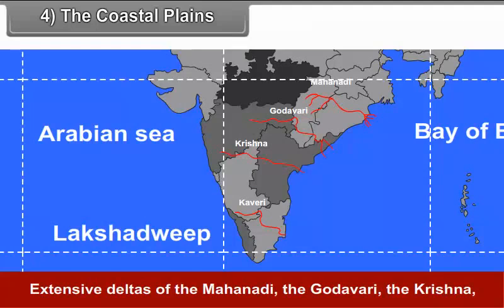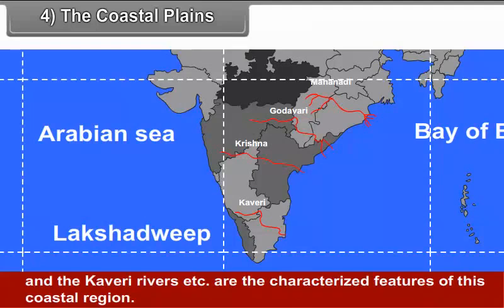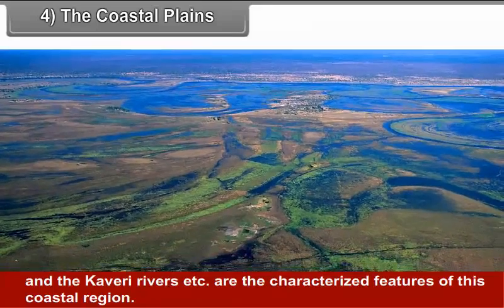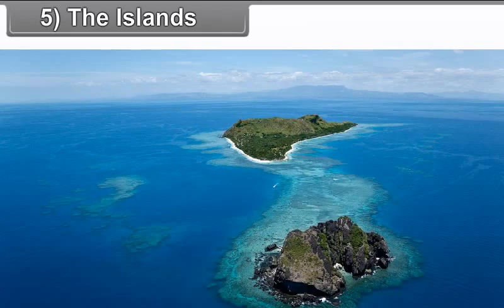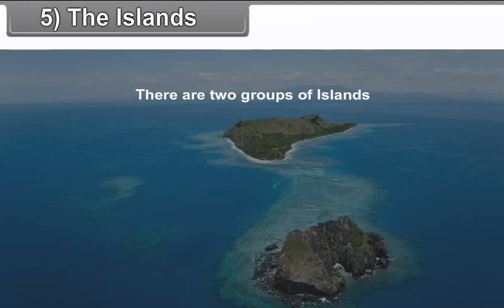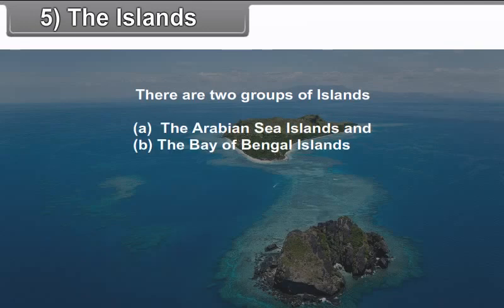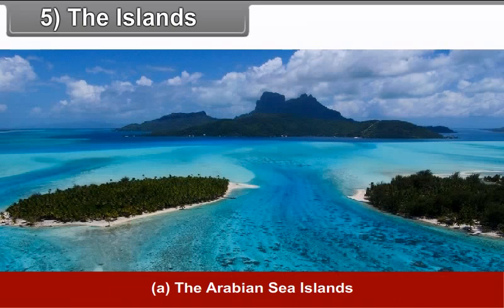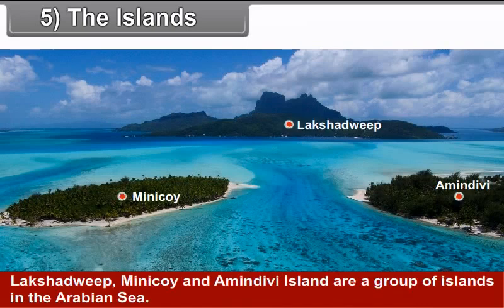The Eastern Coastal Plain is characterized by deltaic plains. These deltas are formed due to the depositional work of rivers. Extensive deltas of the Mahanadi, the Godavari, the Krishna and the Kaveri rivers are the characteristic features of this coastal region.